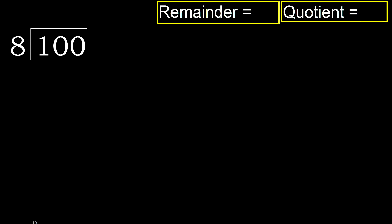100 divided by 8. 1 is less, therefore next. 10 is not less, therefore with 10. 8 multiplied by which number is nearest to 10, but not greater.